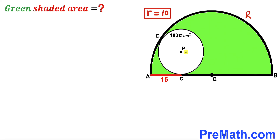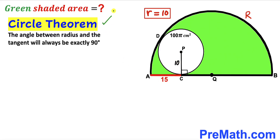In the next step, we connect center P with the point of tangency C. We can see that CP is the radius of the white circle, so CP = 10 centimeters. By the circle theorem, the angle between a radius and the tangent line is always exactly 90 degrees, so this angle is 90 degrees.